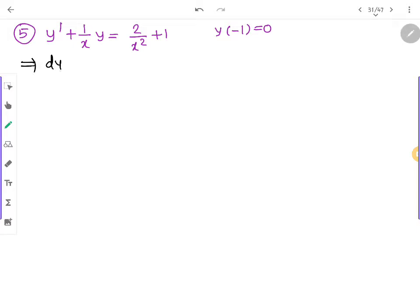Question number 5 kachai na. It says to solve dy/dx plus 1 upon x times y is equal to 2 upon x square plus 1.